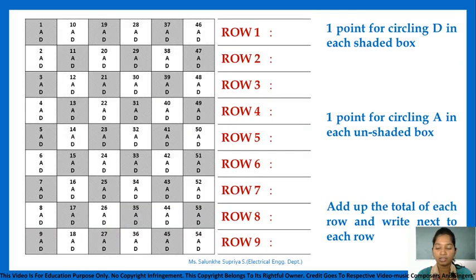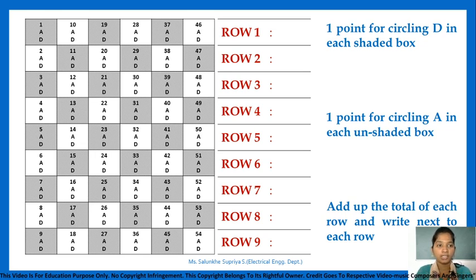The answer sheet will have statements 1 to 54. Each block is different — the first statement block is shaded and the 10th block is unshaded, depending on the statement nature. The statements are classified in different rows. Row 1 includes statements 1, 10, 19, 28, 37, and 46.